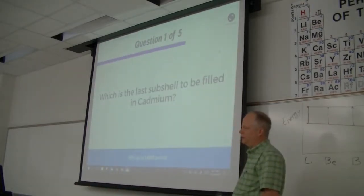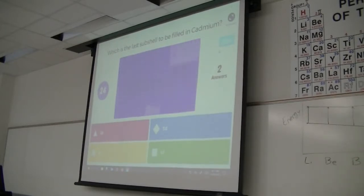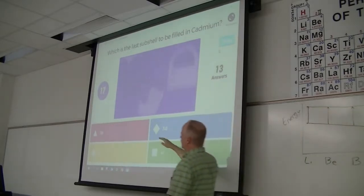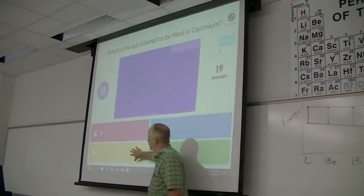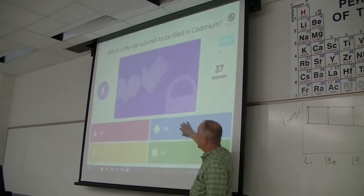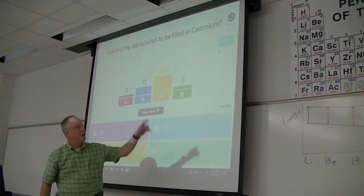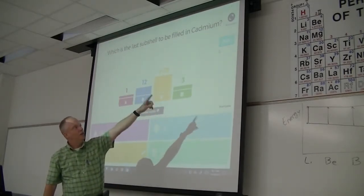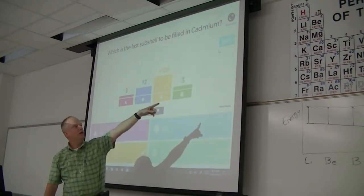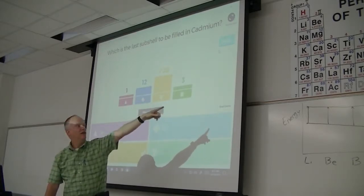Which is the last subshell to be filled in cadmium? Cadmium is over here. The choices are: red is 3p, blue is 3d, yellow is 4d, and green is 4f. It's the 4d. If you're looking at those numbers and the periods, those are the principal quantum number for the s block. The 4s block has the first row of d elements, but that's the 3d; then it goes 4s then 3d, then 5s then 4d. So cadmium is on the second row of transition elements.